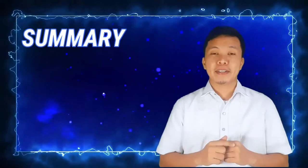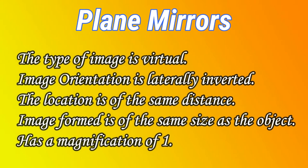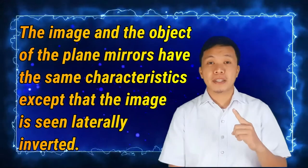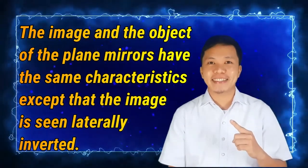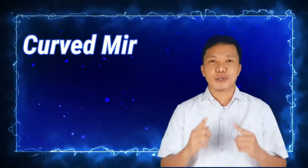Now, to summarize, for plane mirrors, the type of image is virtual and is formed from behind. The image orientation is laterally inverted. The image is located at the same distance from the mirror as the object's distance. And the image formed is of the same size as the object. Plane mirrors produce images that have a magnification of one. In other words, the image and the object of plane mirrors have the same characteristics except that the image is seen laterally inverted and it is a virtual image. So that was all for plane mirrors. And the next session would be the curved mirrors.